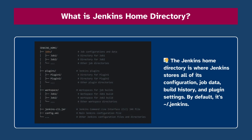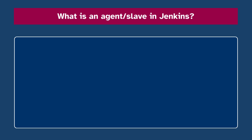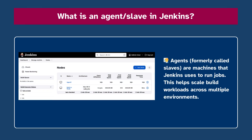Number eighteen: What is the Jenkins home directory? The Jenkins home directory is where Jenkins stores all configurations, job data, build history, and plugin settings. Number nineteen: What is an agent or slave in Jenkins? Agents, formerly called slaves, are machines that Jenkins uses to run jobs. This helps scale build workloads across multiple environments.